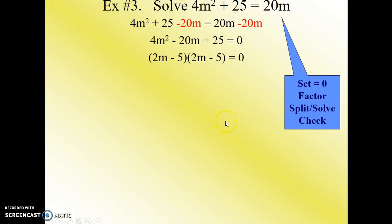Next, we'll factor this into 2m minus 5 times 2m minus 5 equals 0. Set our factor equal to 0. Since the two factors are the same, we only need to do this one time. Solve, and it looks like our solution is 5 over 2.